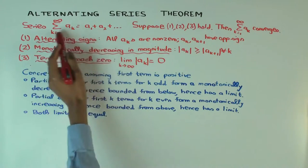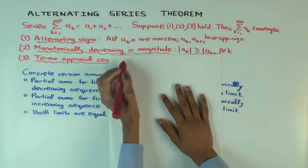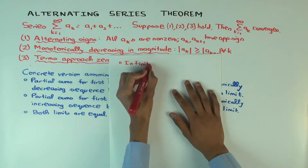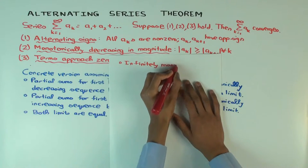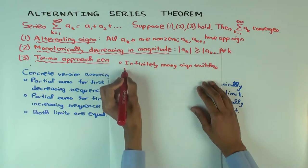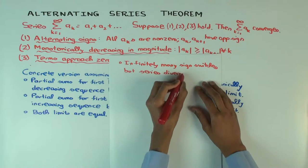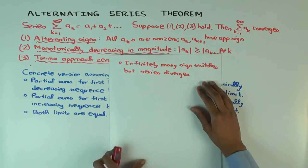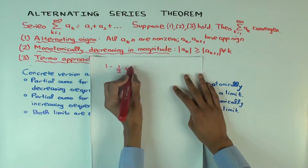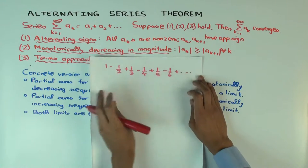What I want to first stress is why the alternating signs matter. I want to show an example where you don't have strictly alternating signs — you still have infinite sign switching — but the series diverges. Let me remind you what the original theorem said: if you have a series something like this, it converges.